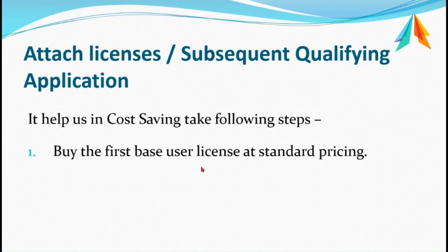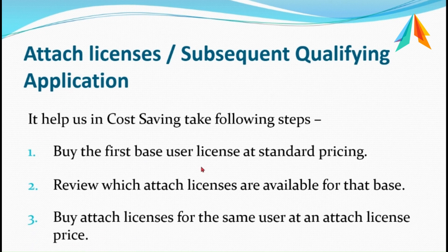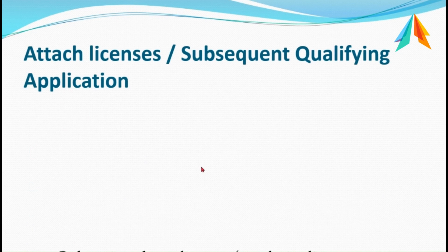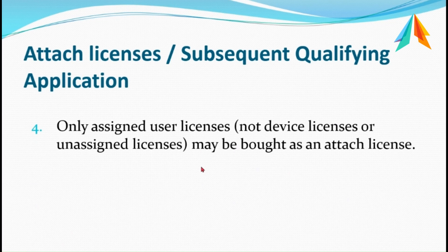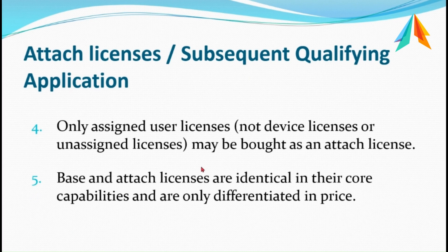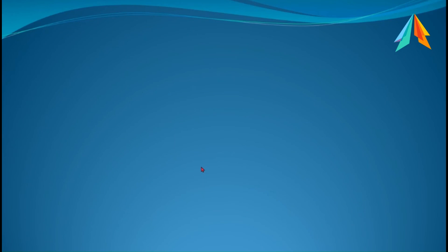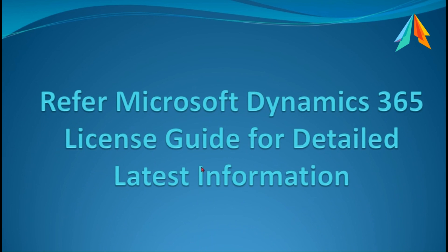For example, if you are using Sales and now want to use Customer Service, you can buy an attached license instead of a base license. Attached and base licenses are for the same user. Base license and attached license are identical in capabilities — the only difference is the price. So an attached license can help you save a lot of money. The information shared is based on the Dynamics 365 license guide, which is revised almost every month, so please refer to the latest guide whenever you want to buy anything.